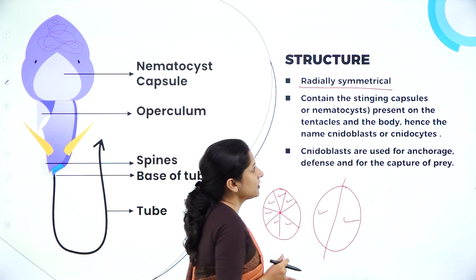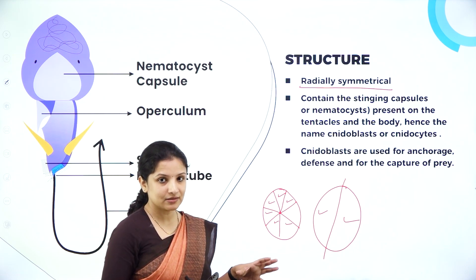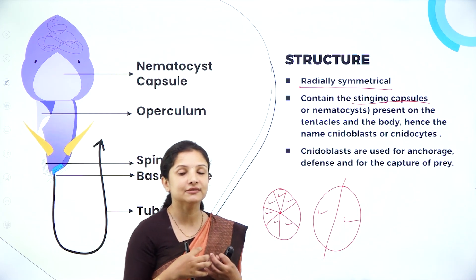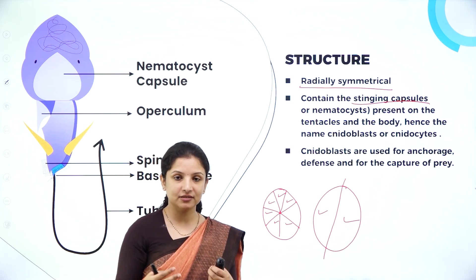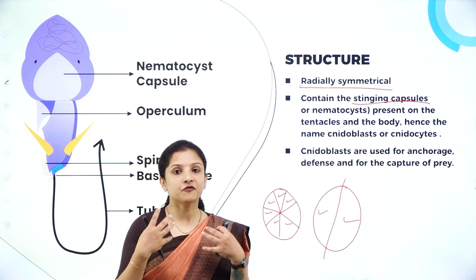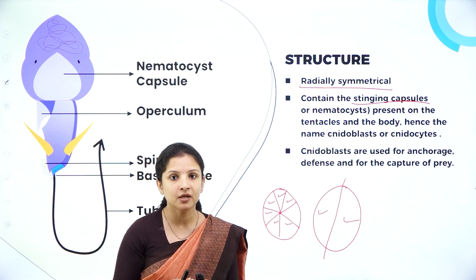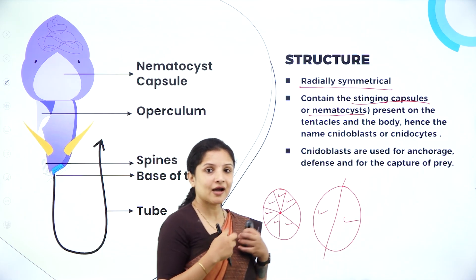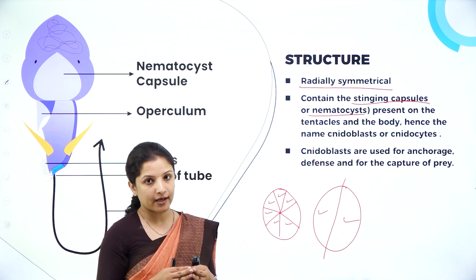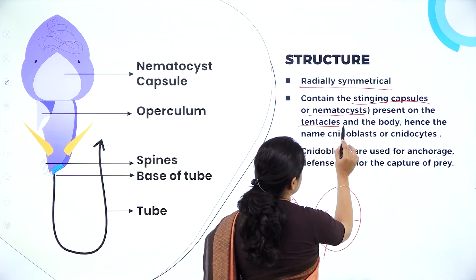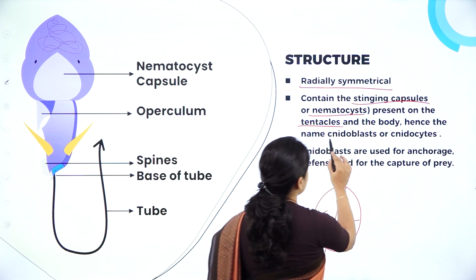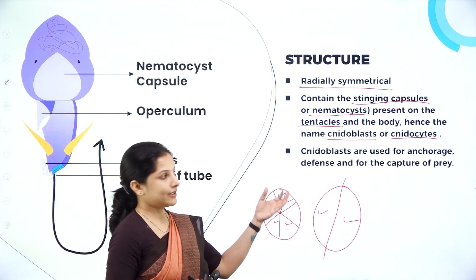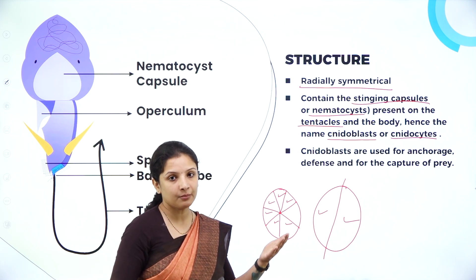So they are radially symmetrical, and one of the most distinguishing characteristics of cnidarians is that they contain stinging capsules. A stinging capsule is like a protective or defensive structure for these organisms, wherein they can frighten other organisms which come to disturb them by stinging them using these stinging capsules. These stinging capsules are also called as nematocysts. They are present in their tentacles, and hence the cells bearing them are called cnidoblasts or cnidocytes — therefore the name cnidarian.